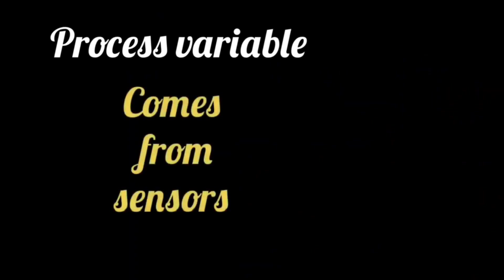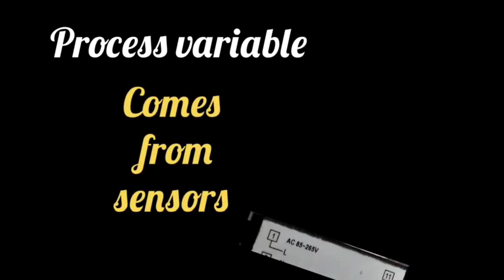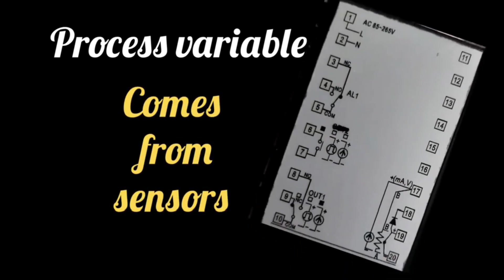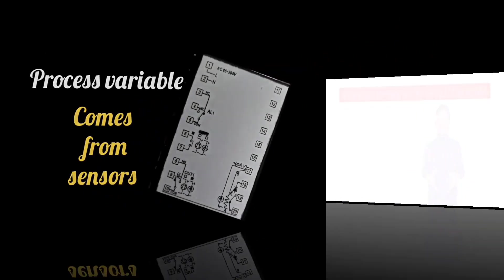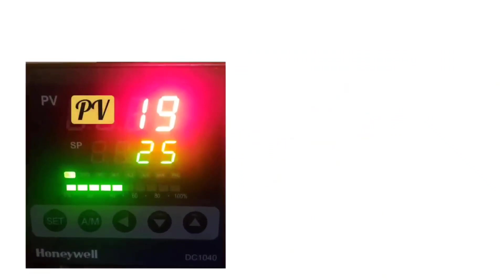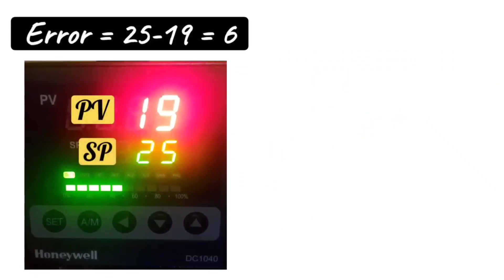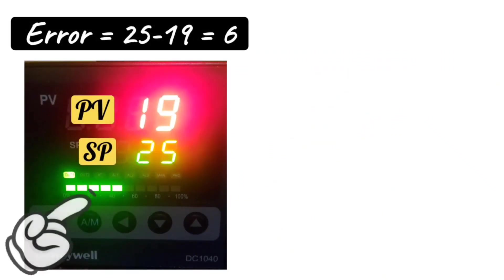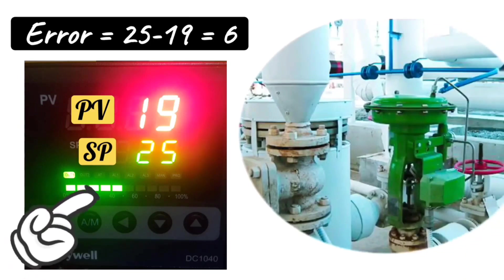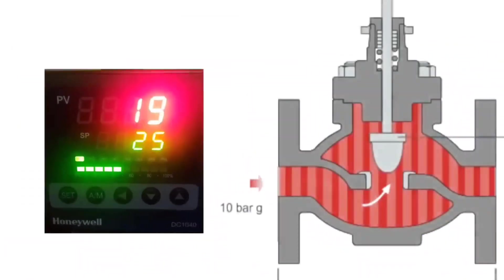The desired set point is set in the PID controller, and the actual value is a signal measured by a sensor. This actual value is also called current value or process variable. Process variable is obtained from sensors, and sensors are connected according to the connection diagram in the PID controller. To minimize the error signal, the output signal of the PID controller is sent to a control valve by opening or closing. The control valve maintains that parameter.